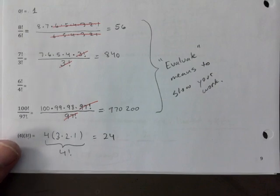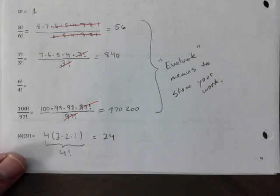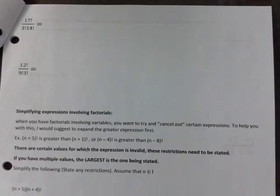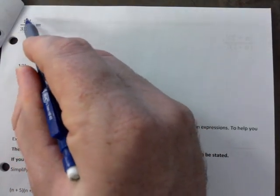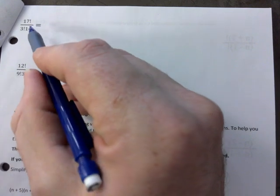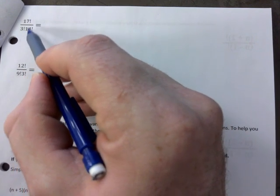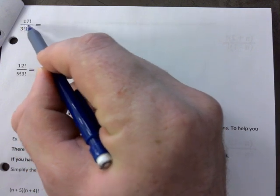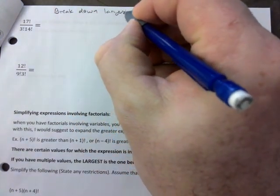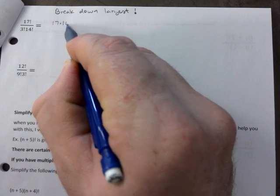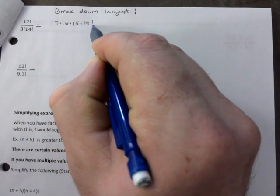Let's move to page 10 — with practice you'll get pretty good at this. Evaluate or simplify the following. There are three different factorials here; which one do you start breaking down? Always break down the largest factorial first. So here I'll expand 17 factorial as 17 times 16 times 15 times 14 — and stop there because I have a 14 factorial in the denominator.